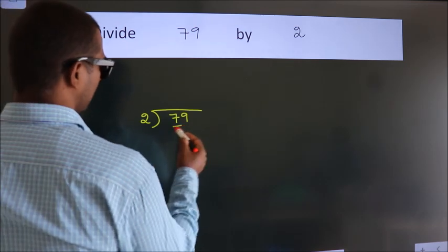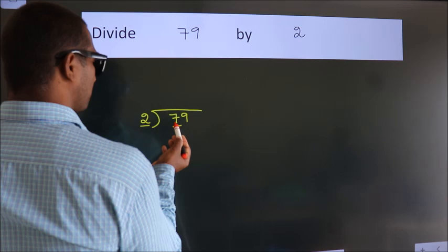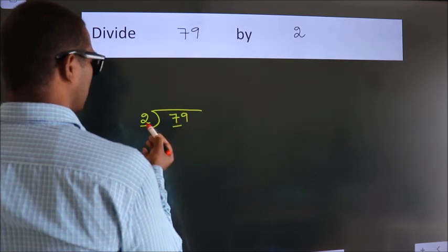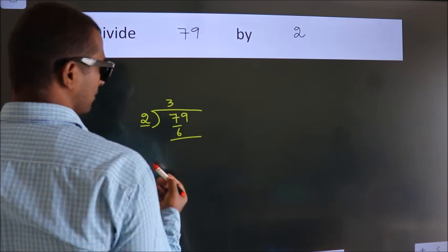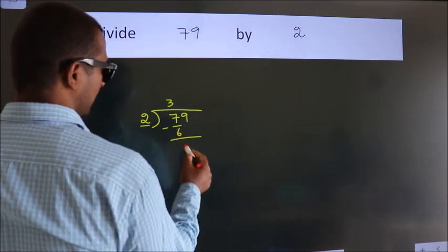Here we have 7. Here 2. A number close to 7 in 2 table is 2 threes, 6. Now we should subtract. We get 1.